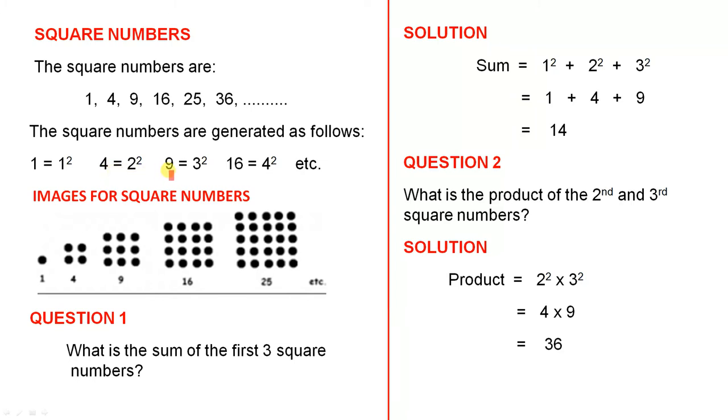The third square number is 9, which is 3 squared. The fourth square number is 16, which is 4 squared.